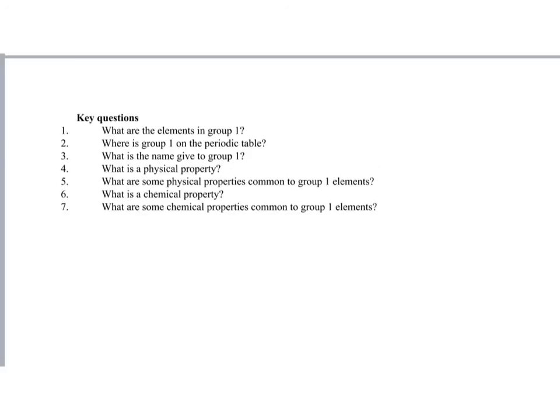Now, at the end of this video, I want you to consider these key questions. What are the elements in group 1? Where is it in the periodic table? If you consider where it is, then you can find what the elements are. What is the other name given to those group 1 metals? What's a physical property, and what are some physical properties common to group 1 elements? What's a chemical property, and what chemical properties are common to group 1 elements? By considering these, you'll have the key points of this video.